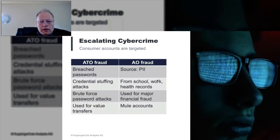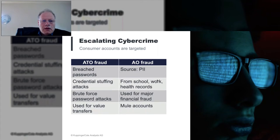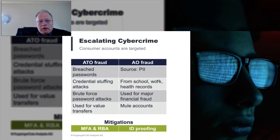Two things increasing in frequency as cybercrime that all organizations have to worry about are account takeover (ATO) and account opening fraud. Account takeover uses breach passwords in credential stuffing attacks — there's still brute force password guessing — and if a bad actor takes over an individual account, that's used to transfer money out of that account. Account opening fraud uses PII that may come from school, work, or health records, and it's often used for major financial fraud to create mule accounts. The two best mitigations are multi-factor authentication and risk-based authentication for ATO, and identity proofing for account opening fraud.